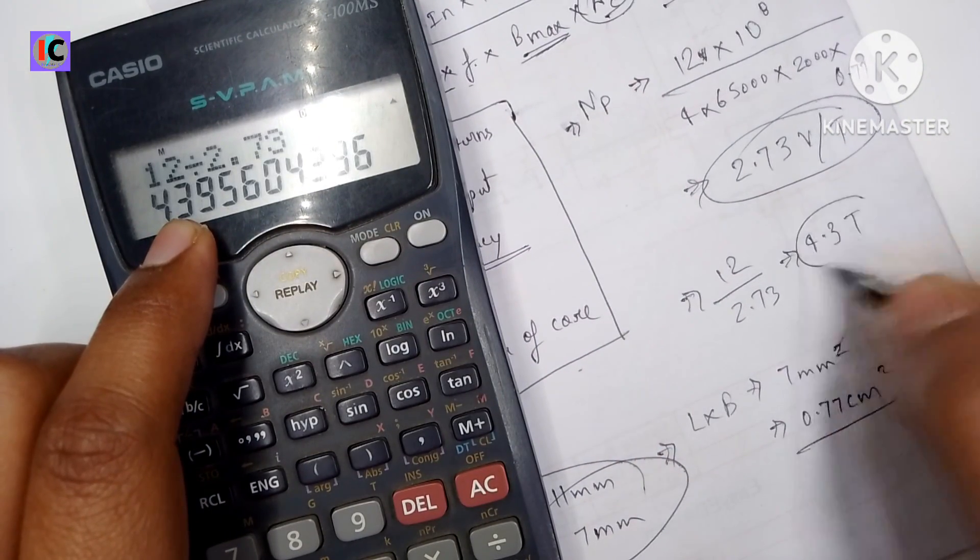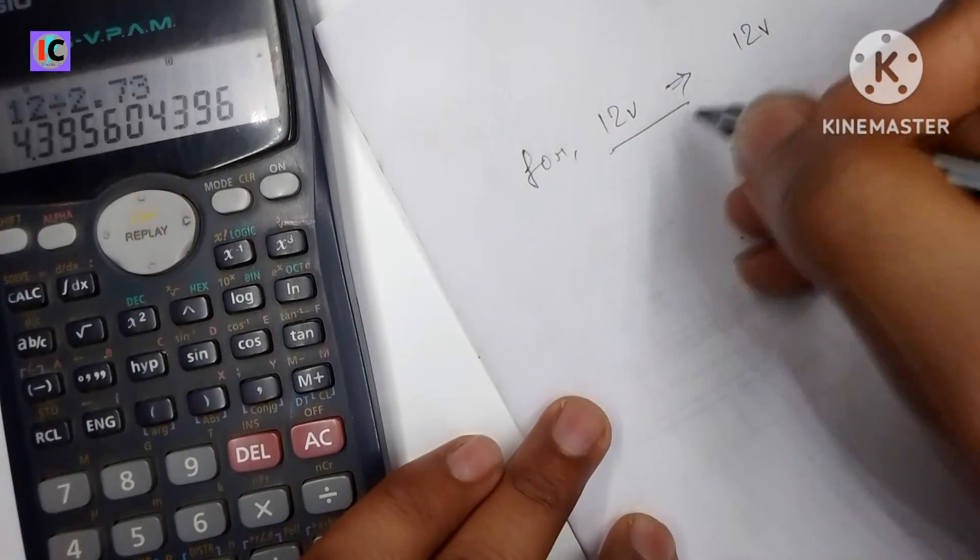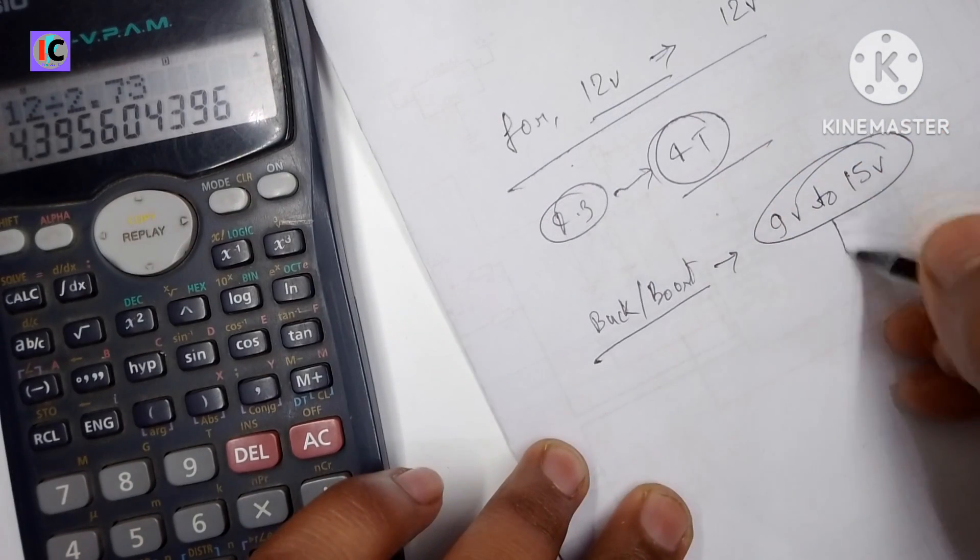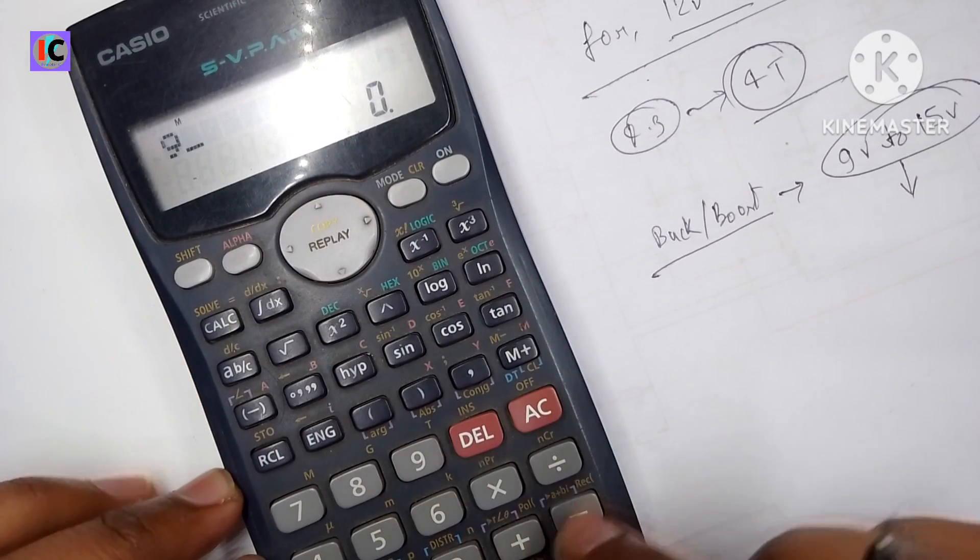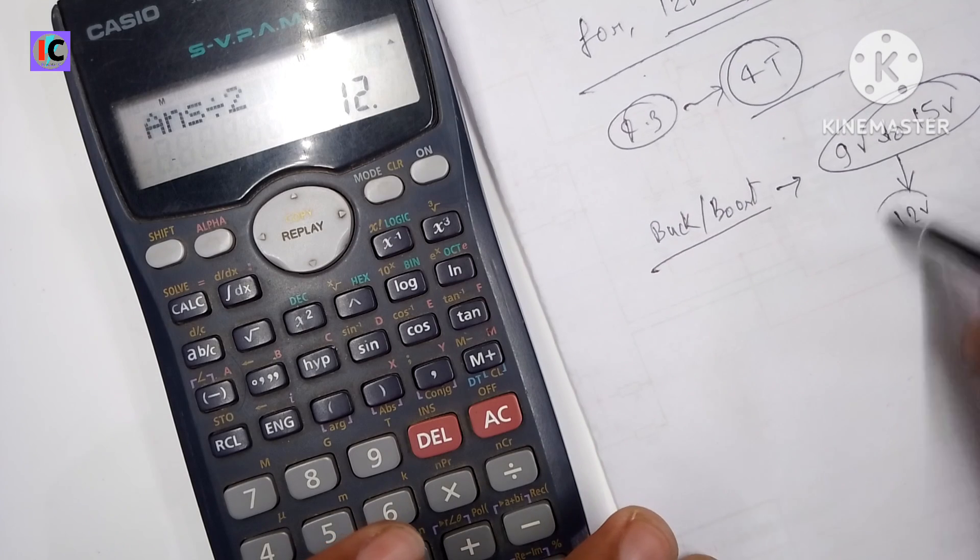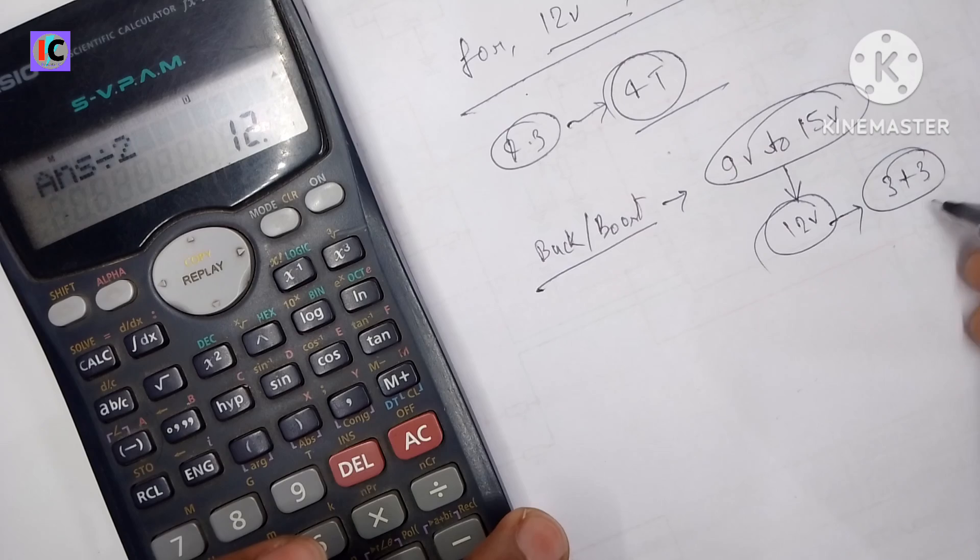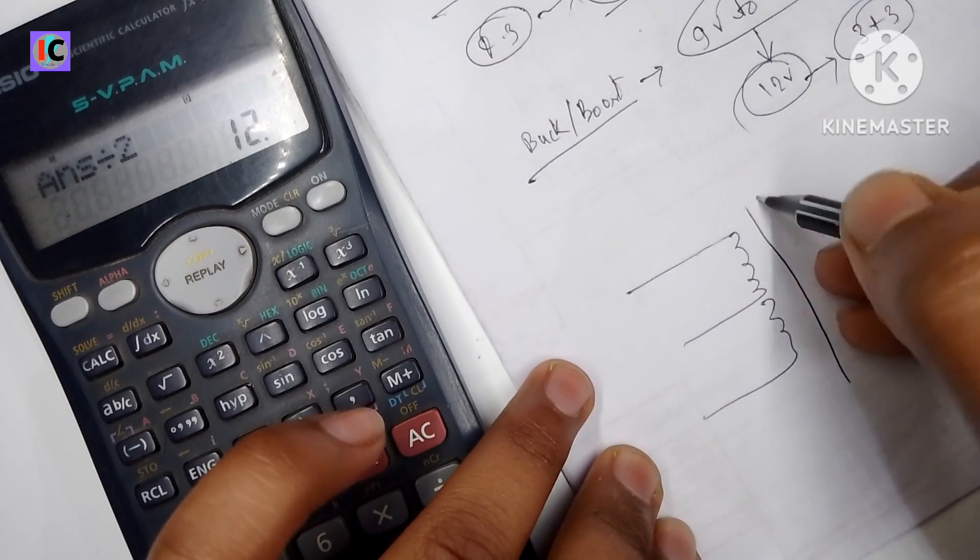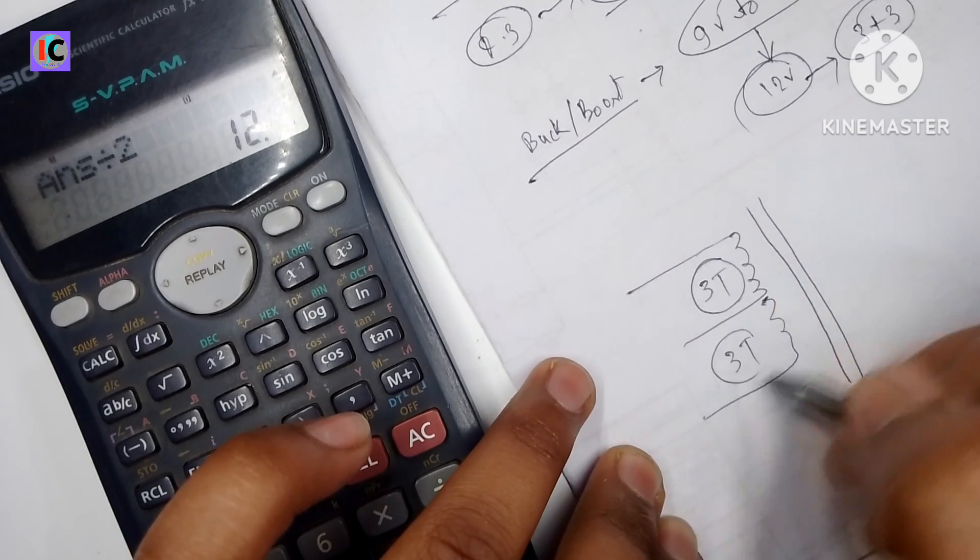So for 12 volts here we have to make almost 4 turns for making 12 volts. But in my case here I'm working with buck and boost mode, so that's why I'm making the turns to get an average of 9 volts or 15 volts or 24 volts. We get almost 3 turns, which is very perfect for lower voltage input also.